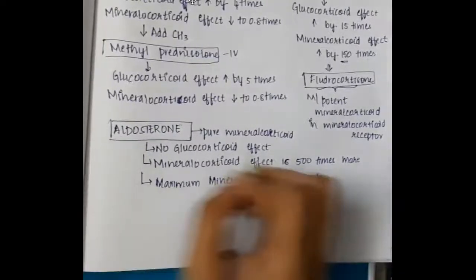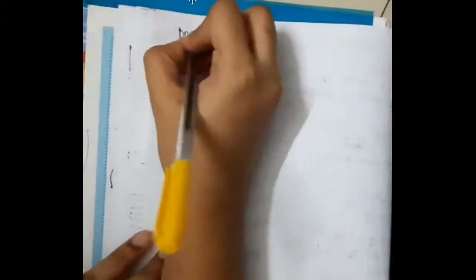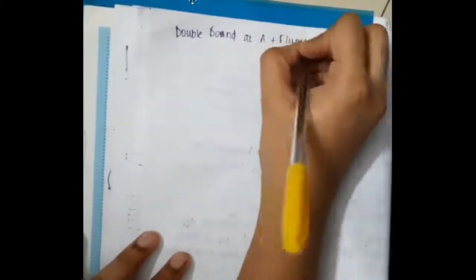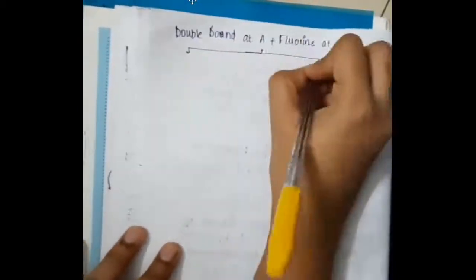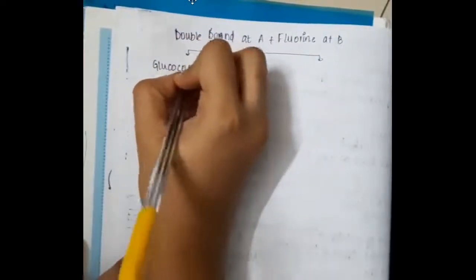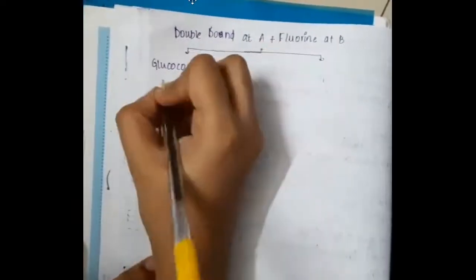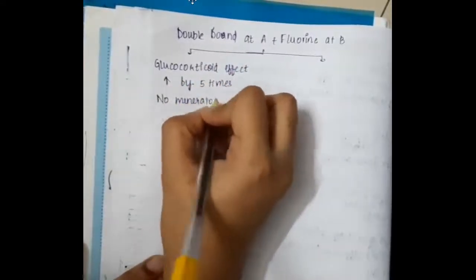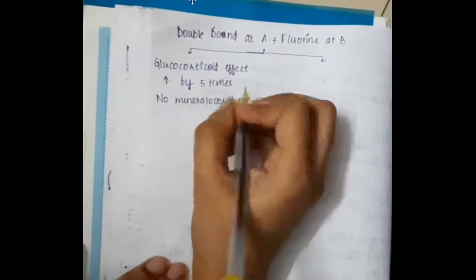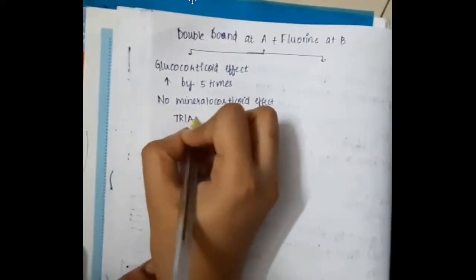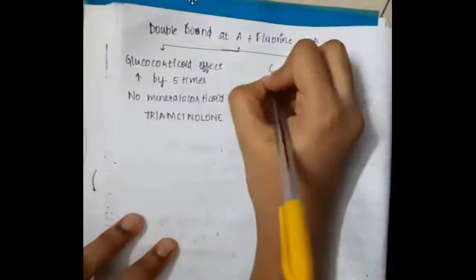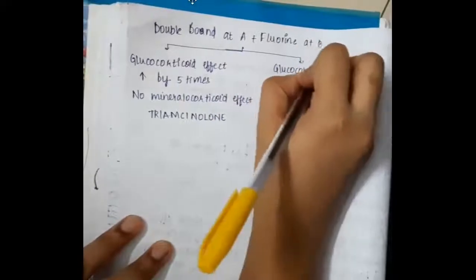If a double bond is added at ring A plus fluorine is added at ring B together, it forms two compounds. The first is triamcinolone, where the glucocorticoid effect is increased by five times and there is no mineralocorticoid effect.